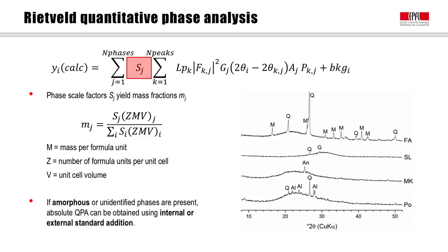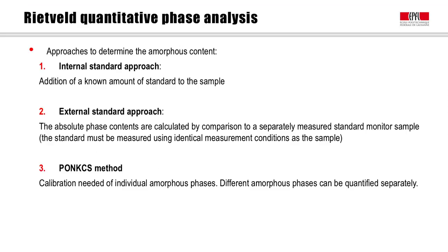However, this assumption is not valid for cements containing SCMs, which are mostly amorphous, as you can see on the right-hand side. Different methods were thus developed to take into account the presence of nanocrystalline or amorphous phases. The presence of these amorphous phases can be quite easily seen in the figure on the right, where you can see this broad hump which is indicative of amorphous phase. There are several ways to deal with amorphous content, and here we will consider three different approaches.